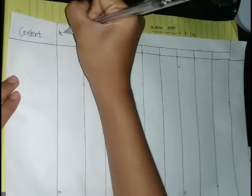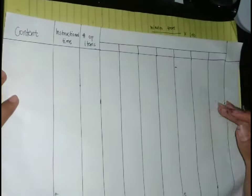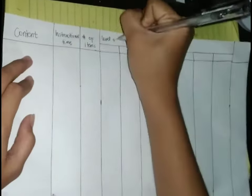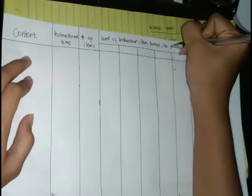First, you have to prepare a table. In the table, we have to put the content, instructional time, number of items, level of behavior, and item format.